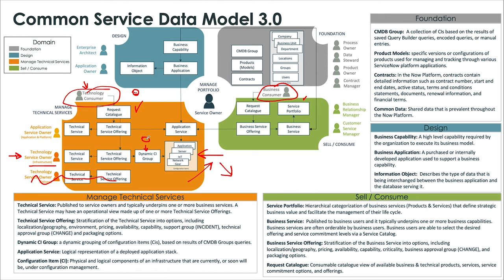This is driven by a query that you can define based on the CI class, the type of CI it is, the vendor — and that's where you match it up with the offering, which is where your SLA, OLA, and support groups are all established. When your infrastructure owner provides those ordering capabilities in the catalog and those catalog items are fulfilled and added to the environment, your query picks them up and now they're part of that technical service offering. Now they can manage that to the SLA that they've prescribed and originally offered.